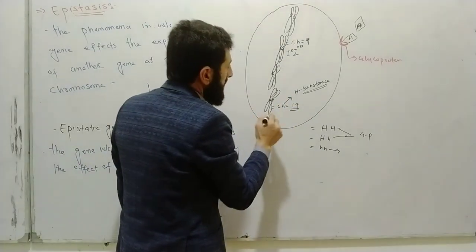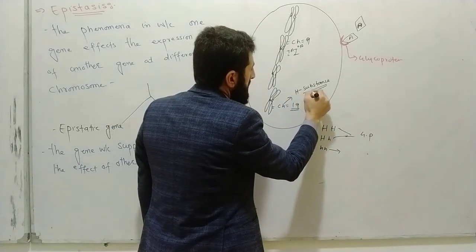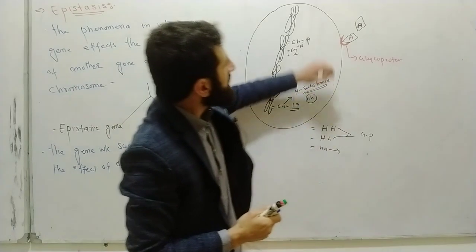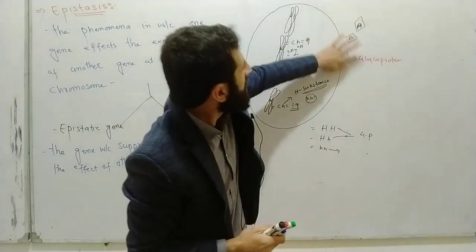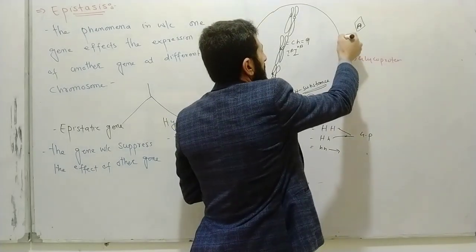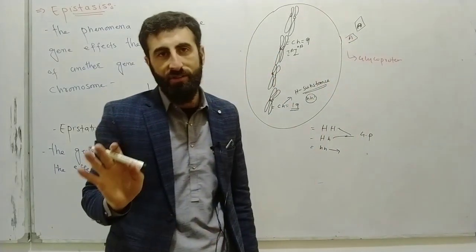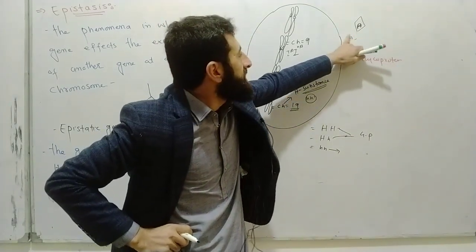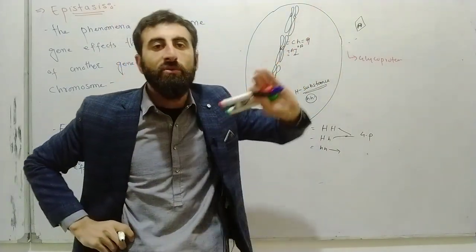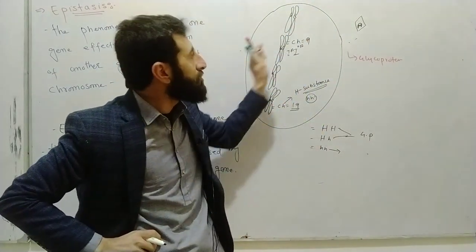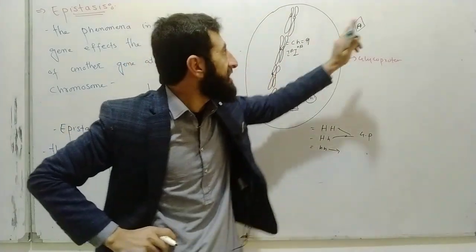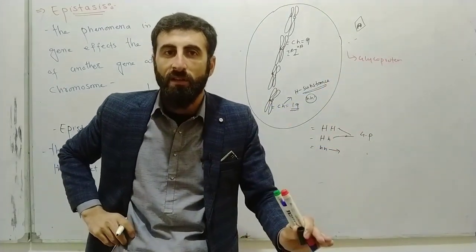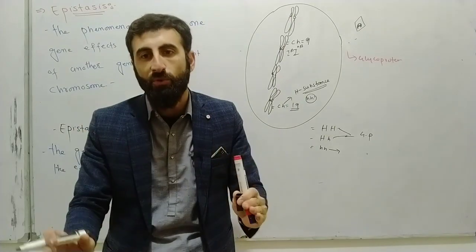But if the case is small h small h on chromosome number 19, then the glycoprotein will not be produced. Without this glycoprotein, no binding site exists, so antigens cannot attach.